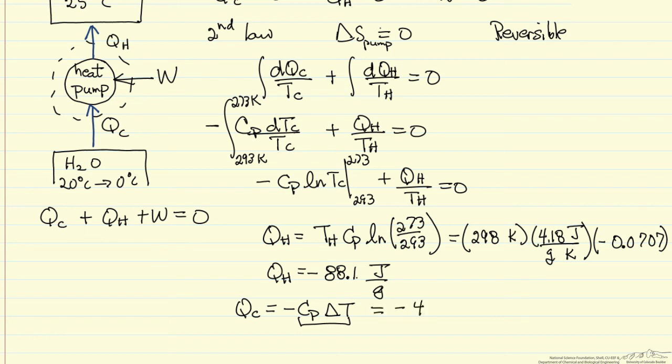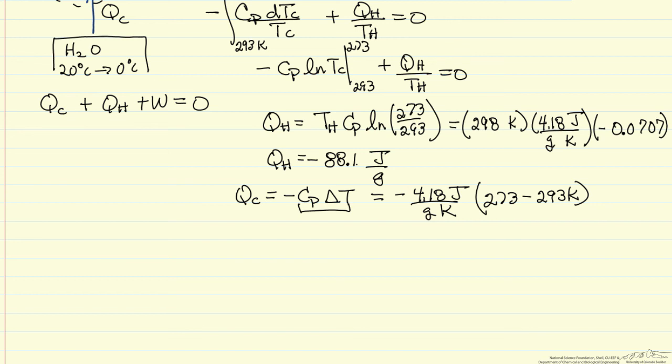So this is, again, the heat capacity for water. And then the temperature, final temperature is 273, initial temperature 293 Kelvin. And so QC, minus sign here, this is negative 83.6 joules per gram.